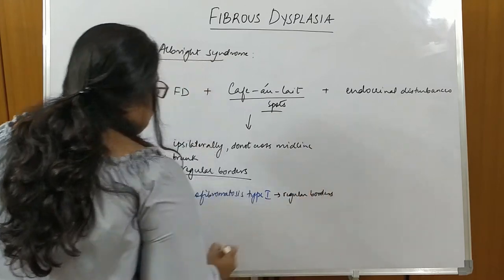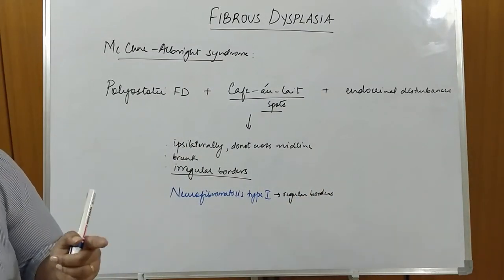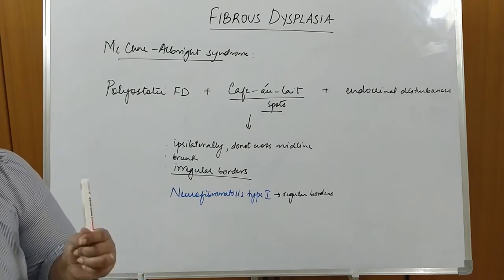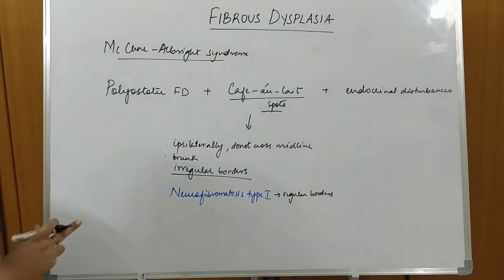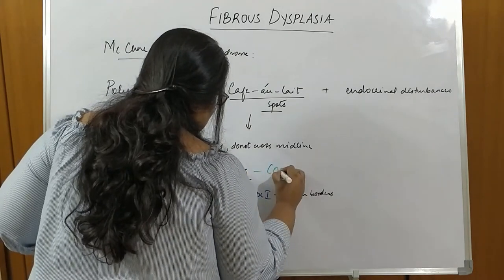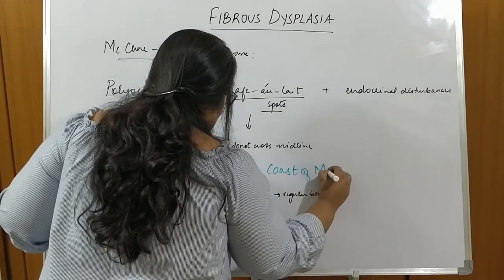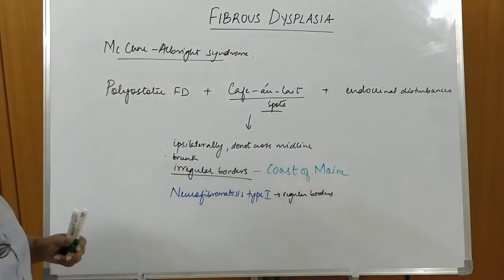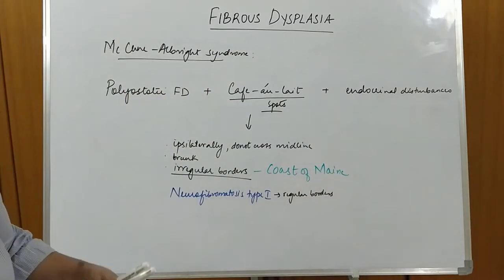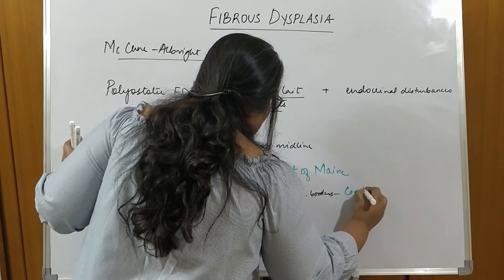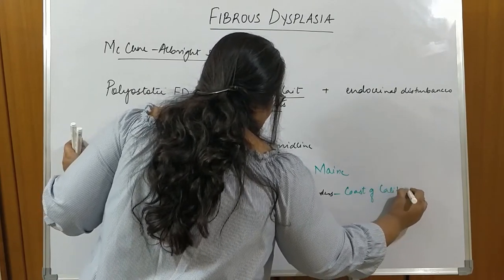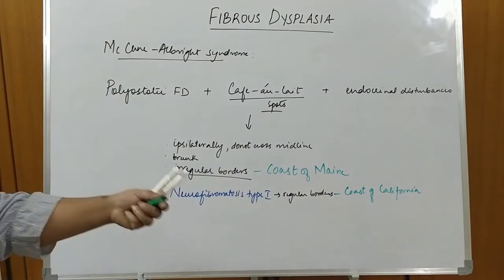Café-au-lait spots are also seen in neurofibromatosis type 1, and you need to differentiate them. The difference is that in Fibrous Dysplasia the borders are irregular, whereas in neurofibromatosis the borders are more regular. The borders have been compared to the coast of Maine (irregular — seen in fibrous dysplasia) versus the coast of California (regular — seen in neurofibromatosis). This is a very important MCQ for NDS exam preparation.